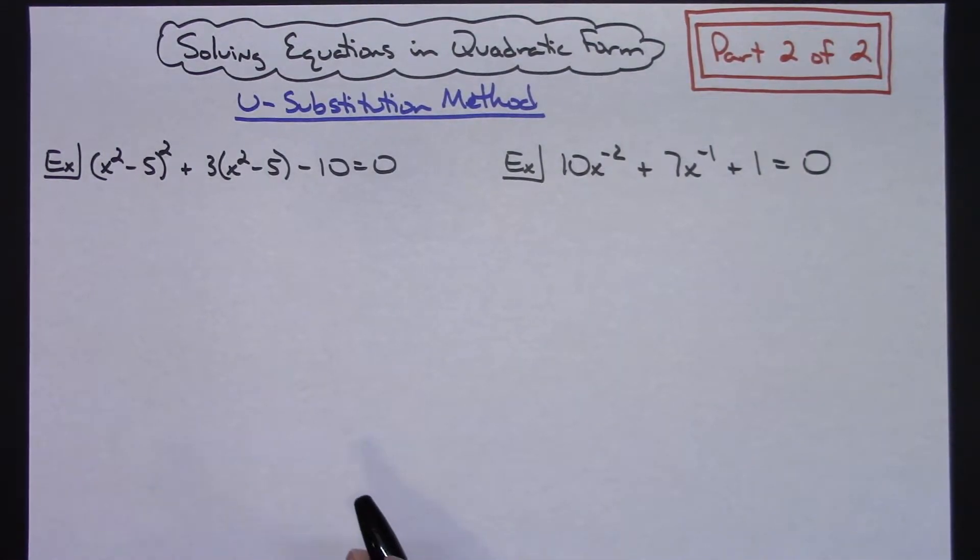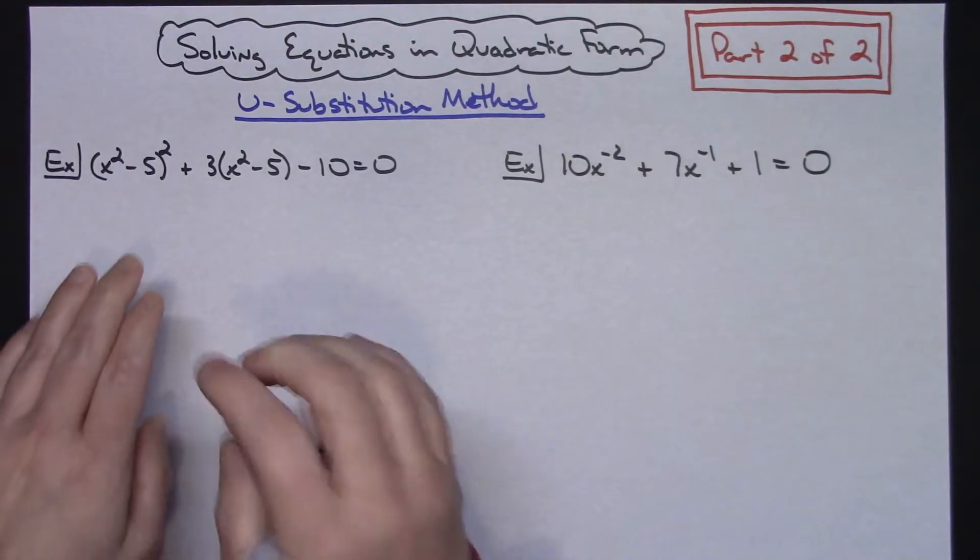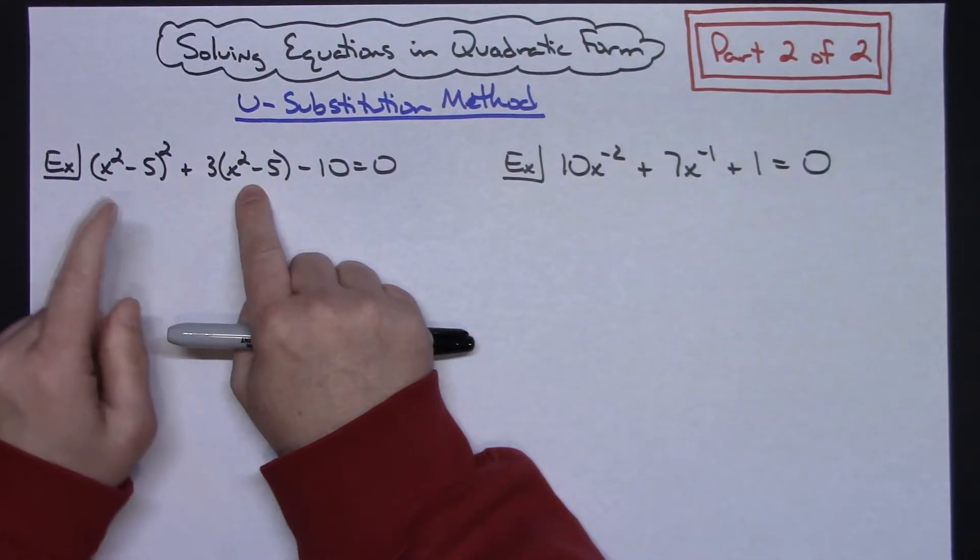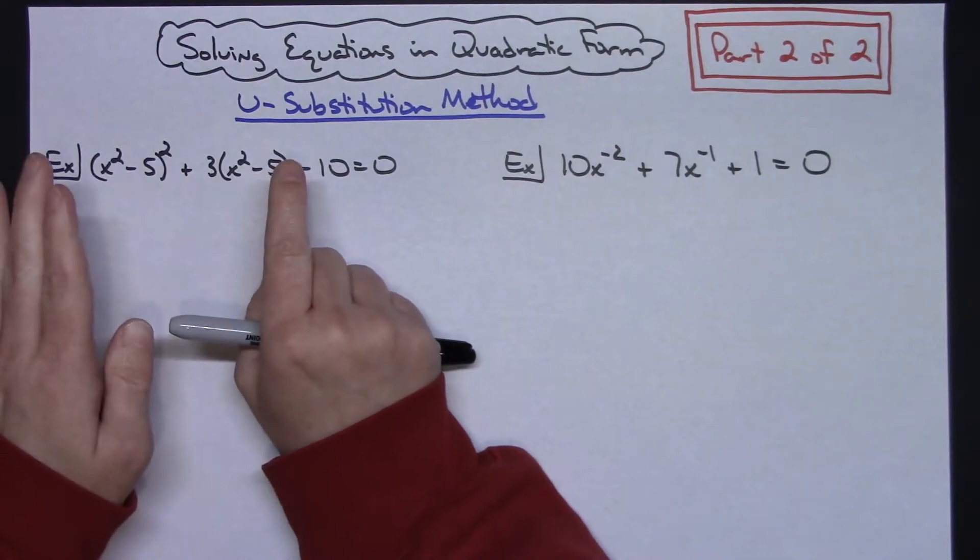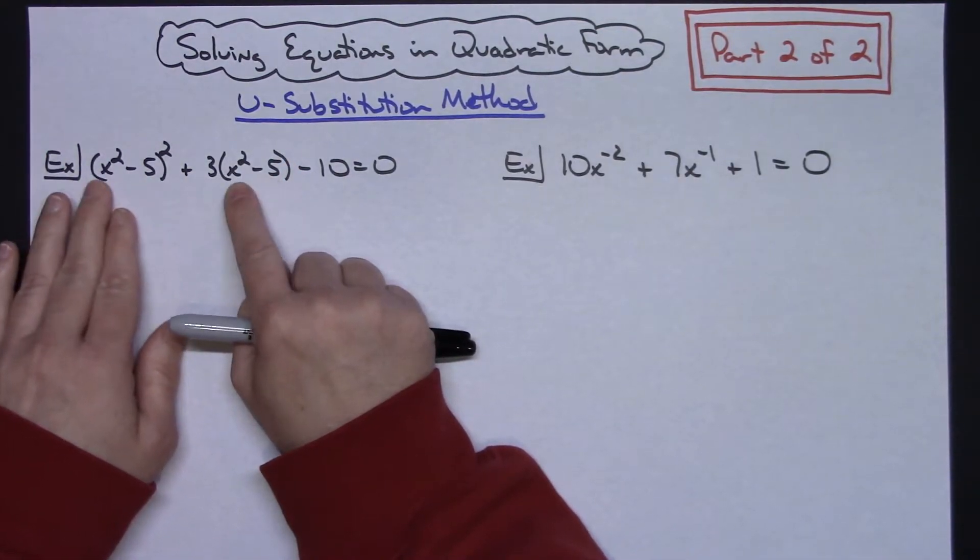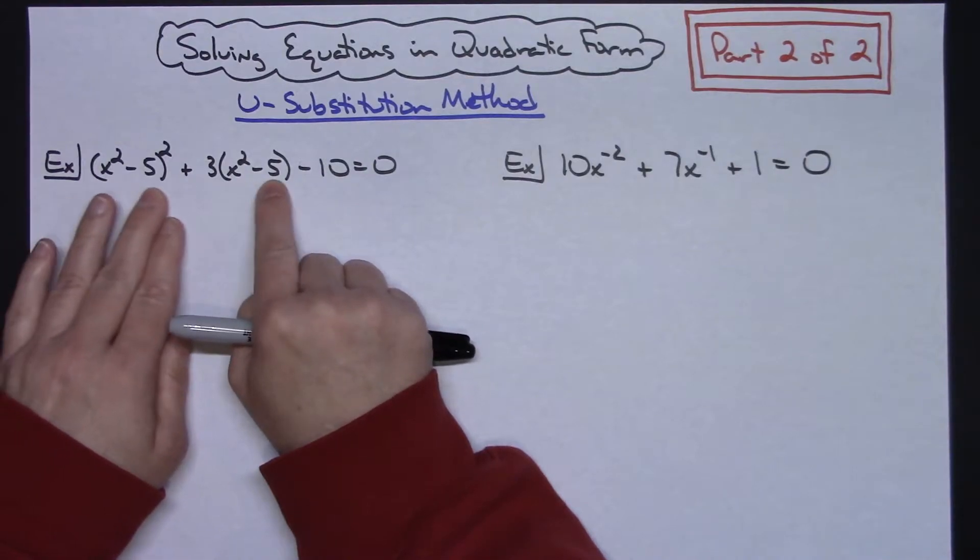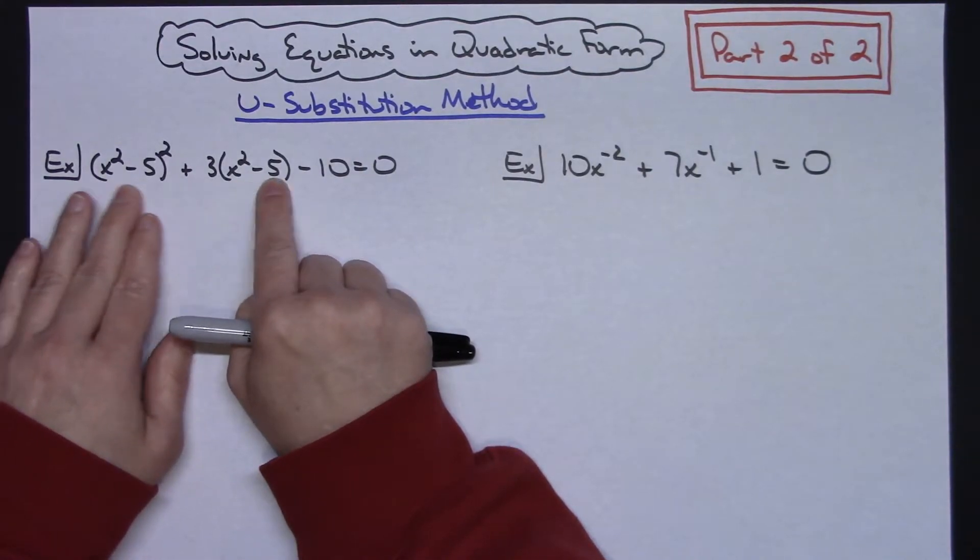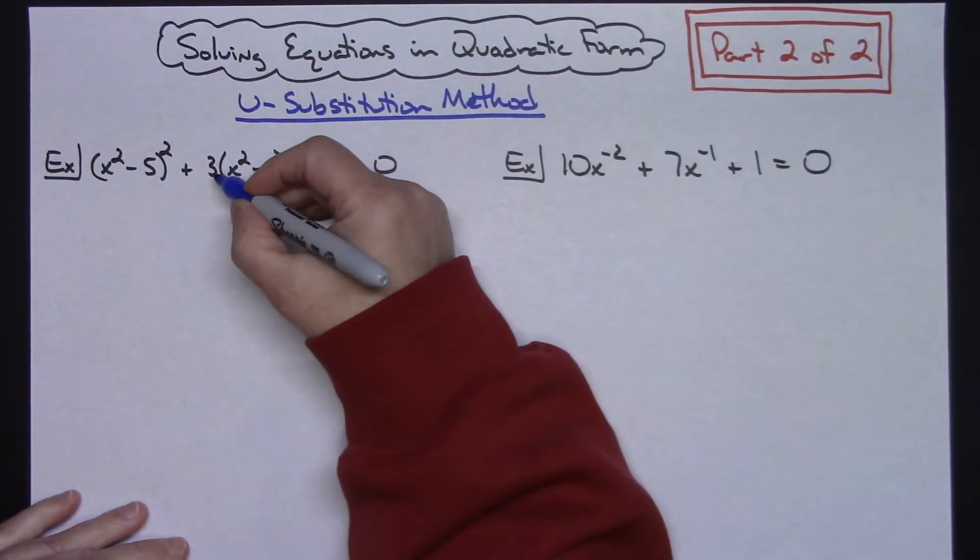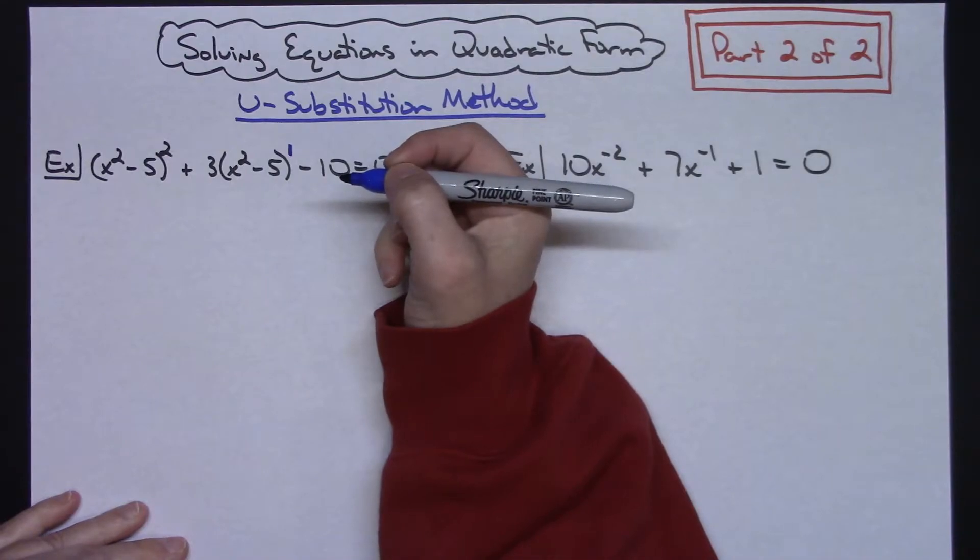From the first video we remember that you look at your first two terms and see if the exponent on the middle term was half of the exponent on the first term. In this scenario we're not just going to have a single variable. We're actually going to have a binomial that matches. We've got x squared minus 5 in both of these terms. It's raised to the second power here and to the first power here.